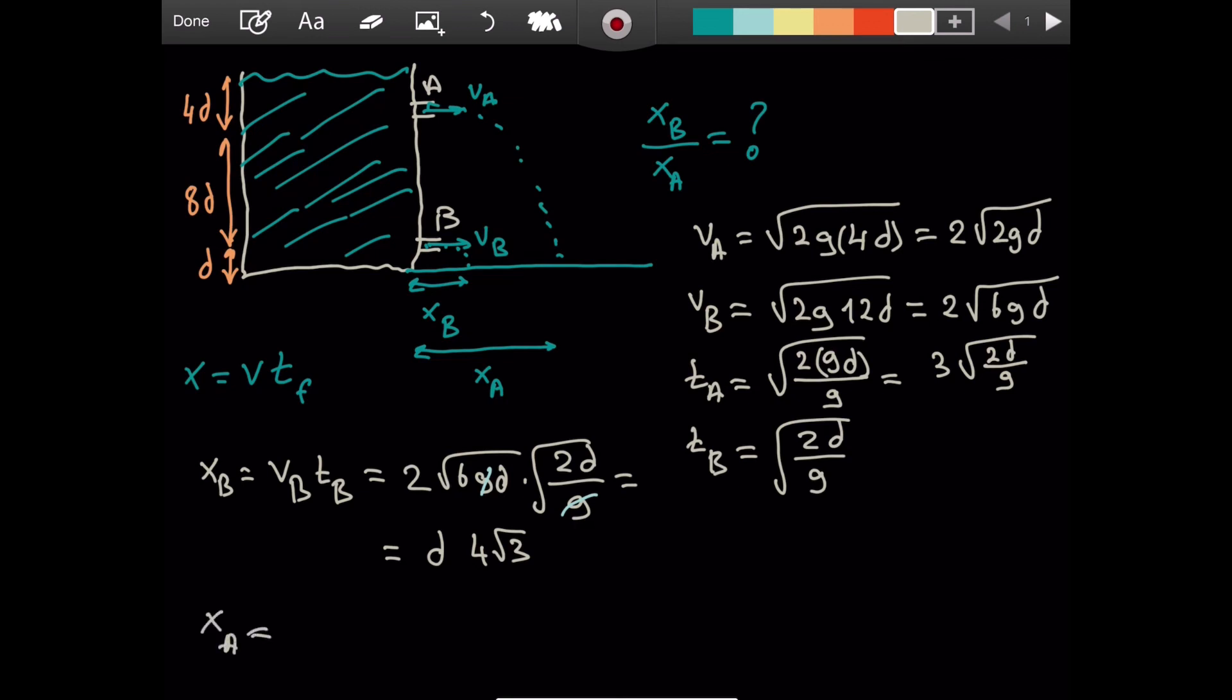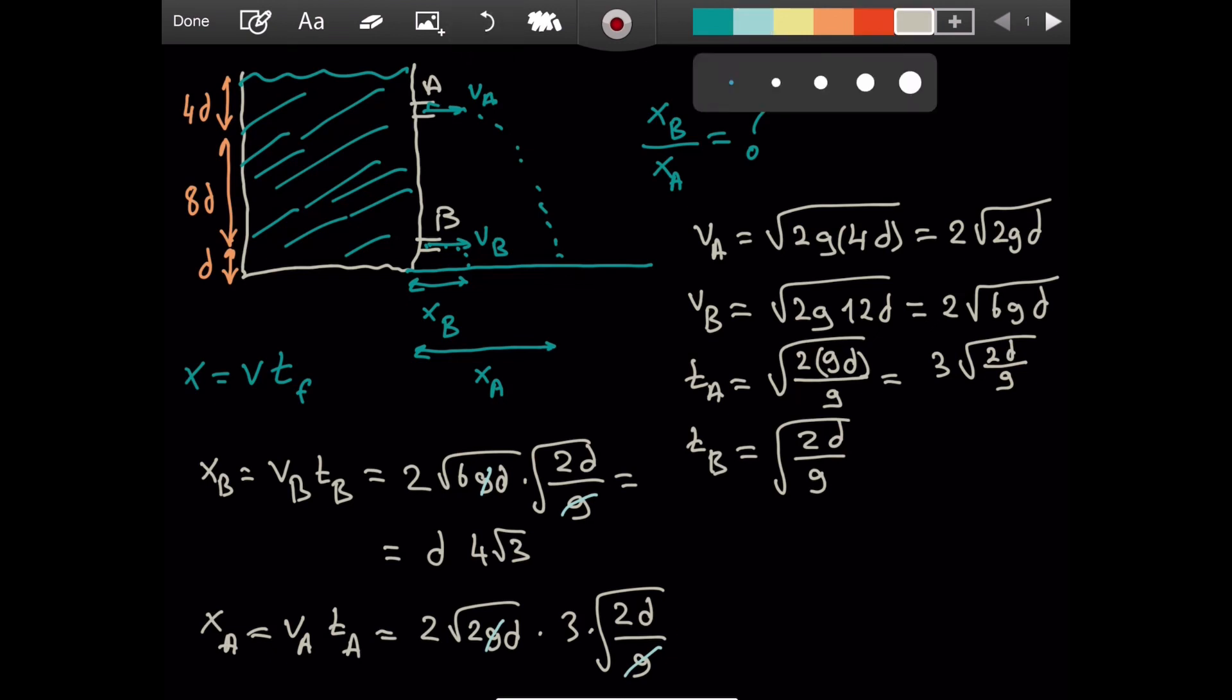And now for xA, it is vA times tA. So we have 2 times the square root of 2gd times tA is 3 times the square root of 2dg. g is simplified again. That's nice. d comes up front. And then we will have 2 times 2 times - oh, excuse me. Yeah, it is going to be 12. I don't know why it took me that much. It is 12, right? Root 2 times root 2, that is 2. 2 times 2 is 4. 4 times 3 is 12.